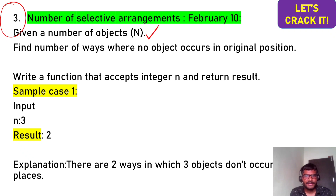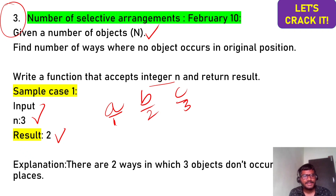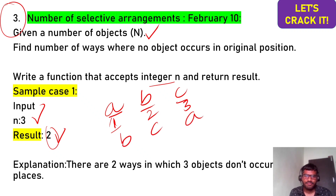The third question is 'Number of Selective Arrangements,' asked on February 10th. Given n objects, find the number of ways where no object occurs in its original position (derangements). If n=3, the result is 2. For objects A, B, C in positions 1, 2, 3: A must not be in position 1, B not in 2, C not in 3. The valid arrangements are BCA and CAB — only two possibilities.